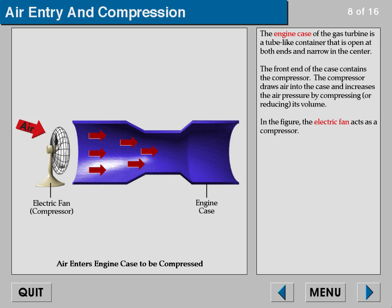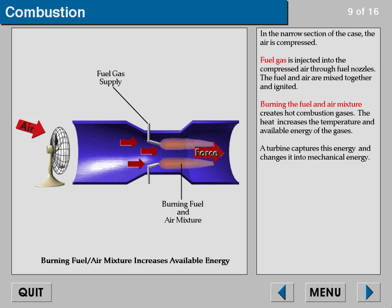In the narrow section of the case the air is compressed. Fuel gas is injected into the compressed air through fuel nozzles. The fuel and air are mixed together and ignited. Burning the fuel and air mixture creates hot combustion gases; the heat increases the temperature and available energy of the gases.